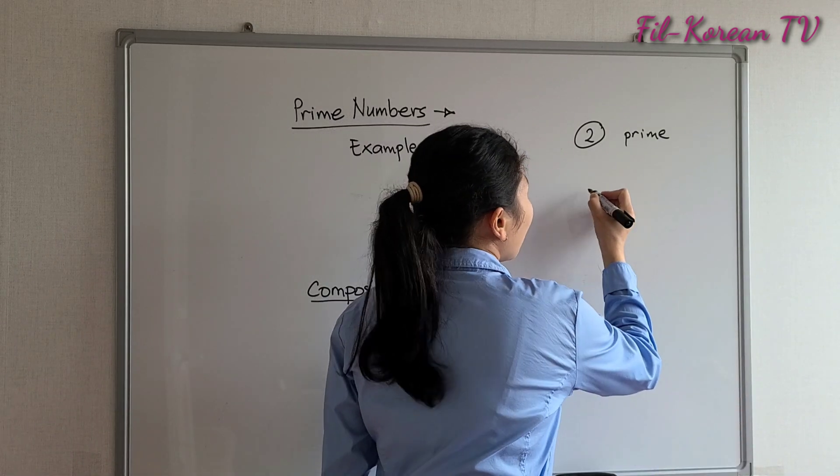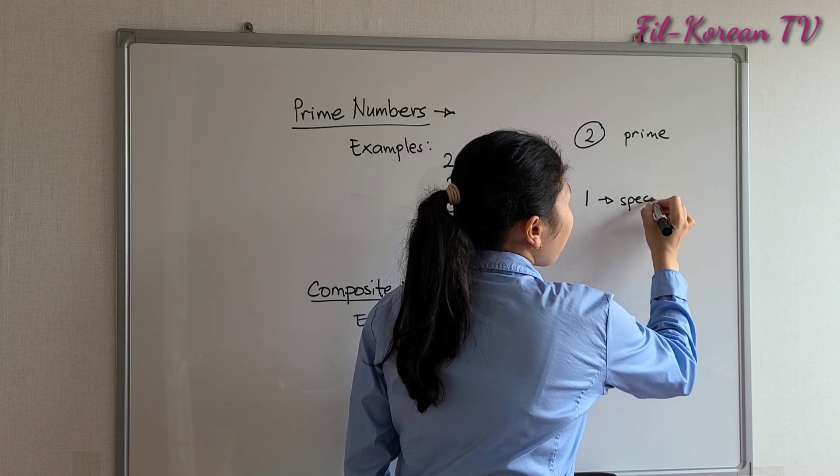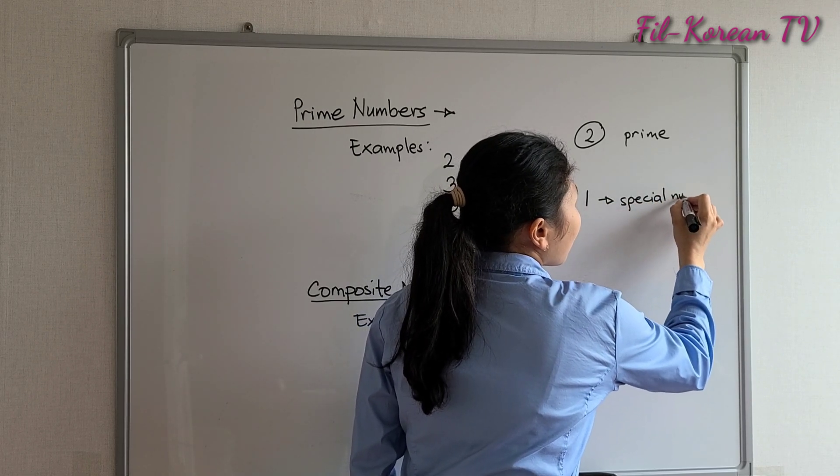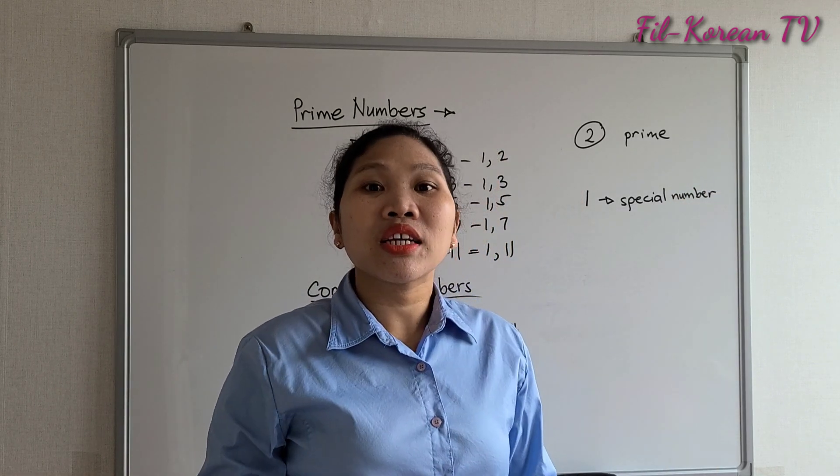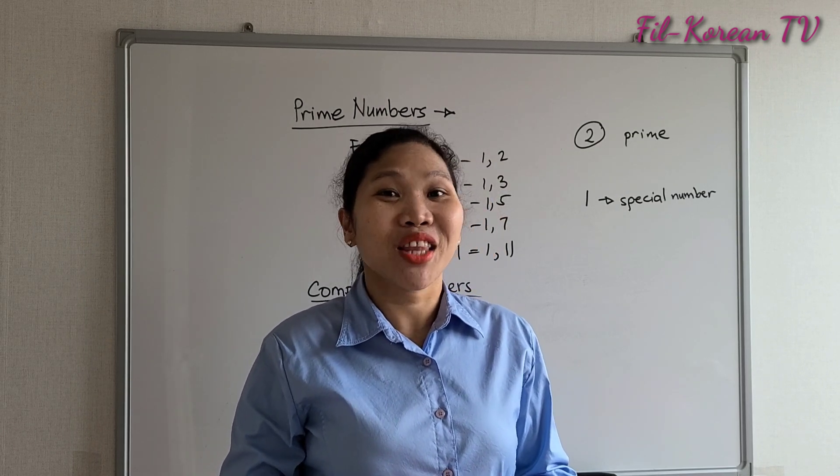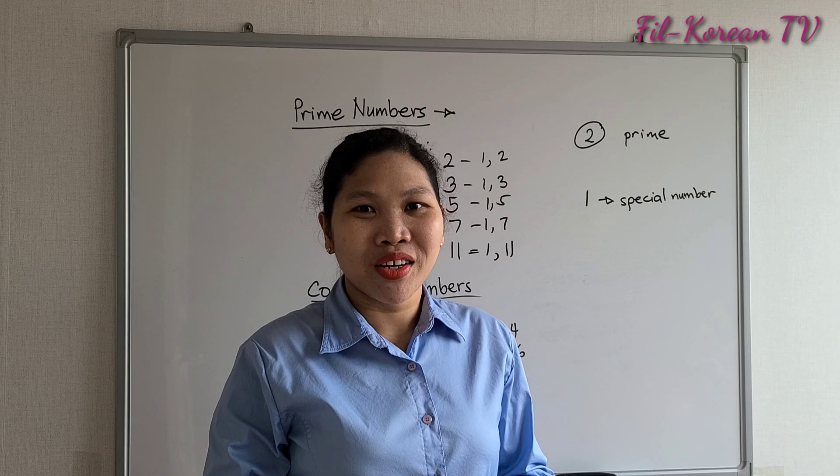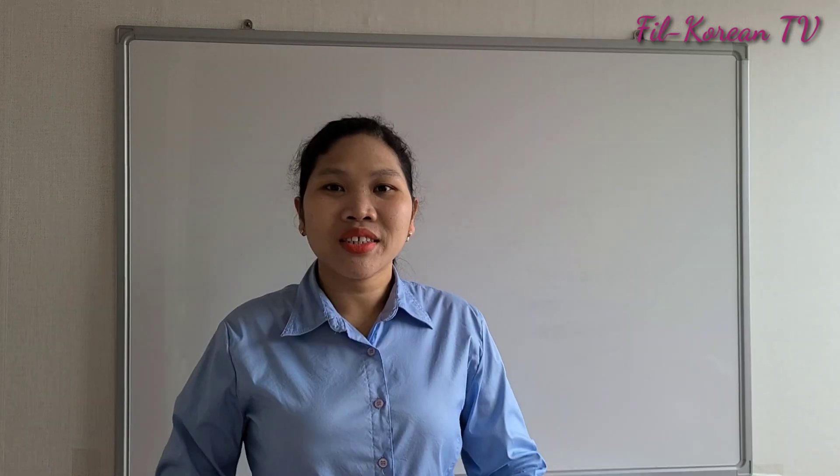And then, one. One is a special number. It is not a prime number, neither a composite number. It is a special number—not a prime number, not a composite number.